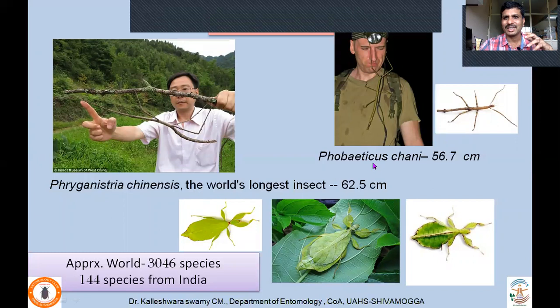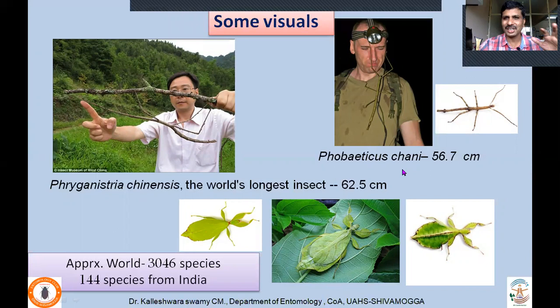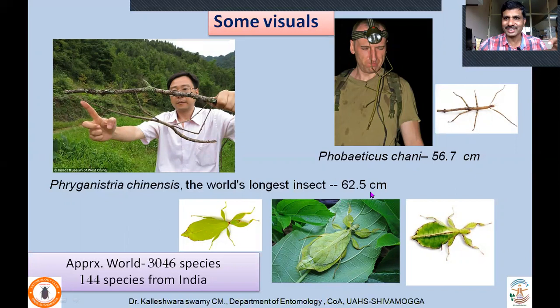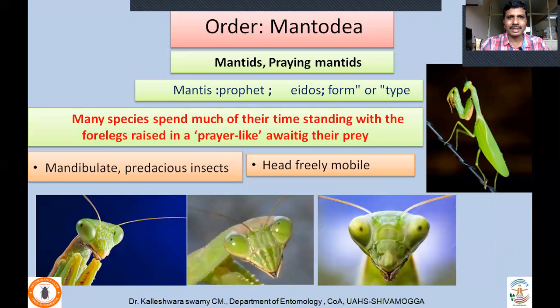This order consists of the longest insect group. Phobaeticus chani, measuring 56.7 cm found in Malaysia, was considered the longest insect. But in 2016, Phobaeticus chani was surpassed by Phryganistria chinensis, described from China, which measures 62.5 cm and is now considered the longest insect. Approximately 3,046 species have been described worldwide and 144 species from India. Considering that fewer species have been described and they do not cause much agricultural damage, they are considered a minor order.